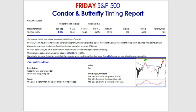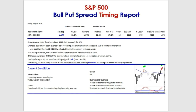So we have an implied option premium selling edge of positive 4.9%. Statistically, it's more likely than usual that our current market condition will end up being a favorable one for market-neutral option premium selling. That's the condor/butterfly timing report — looking better than it was when it was underneath the 50-day simple moving average.